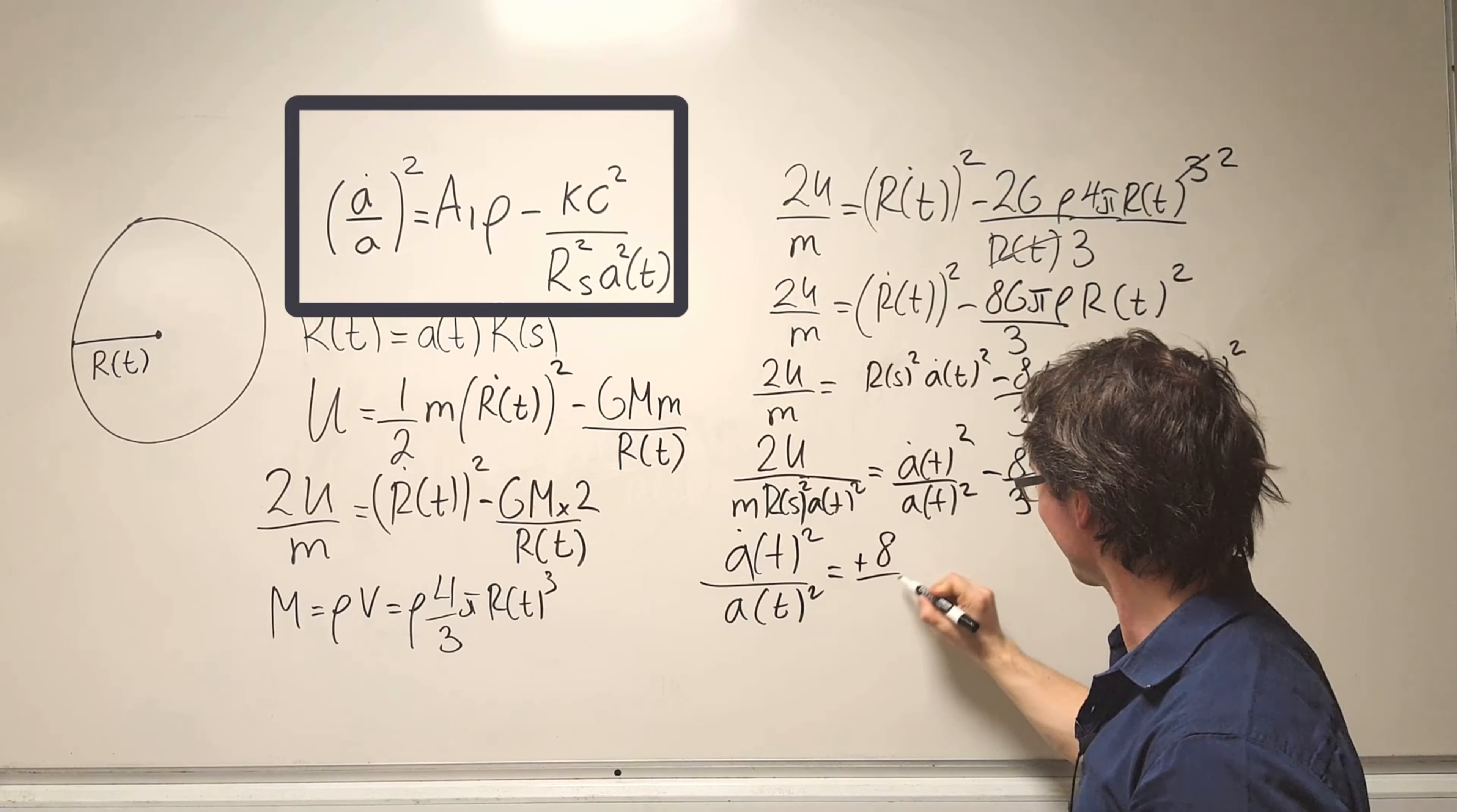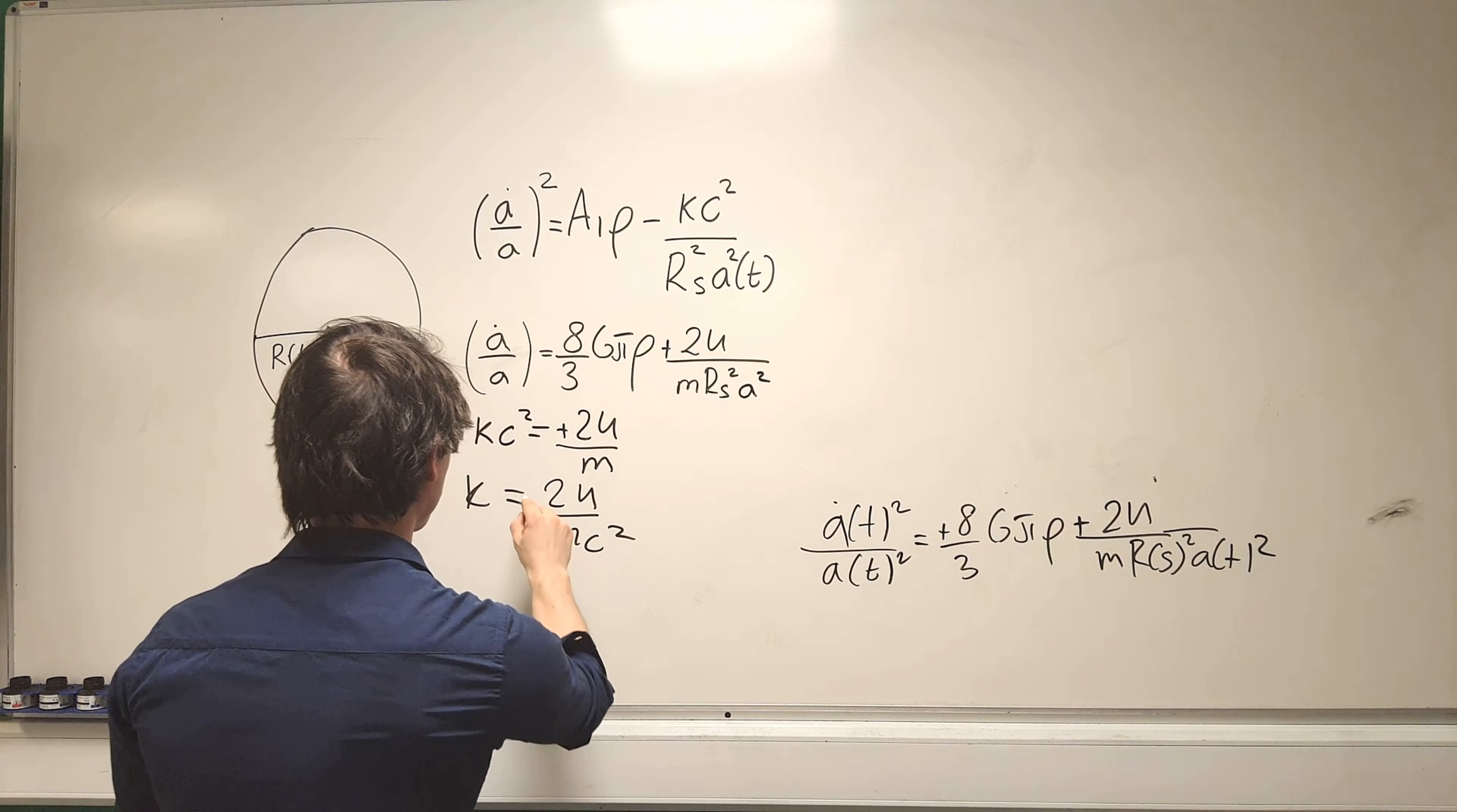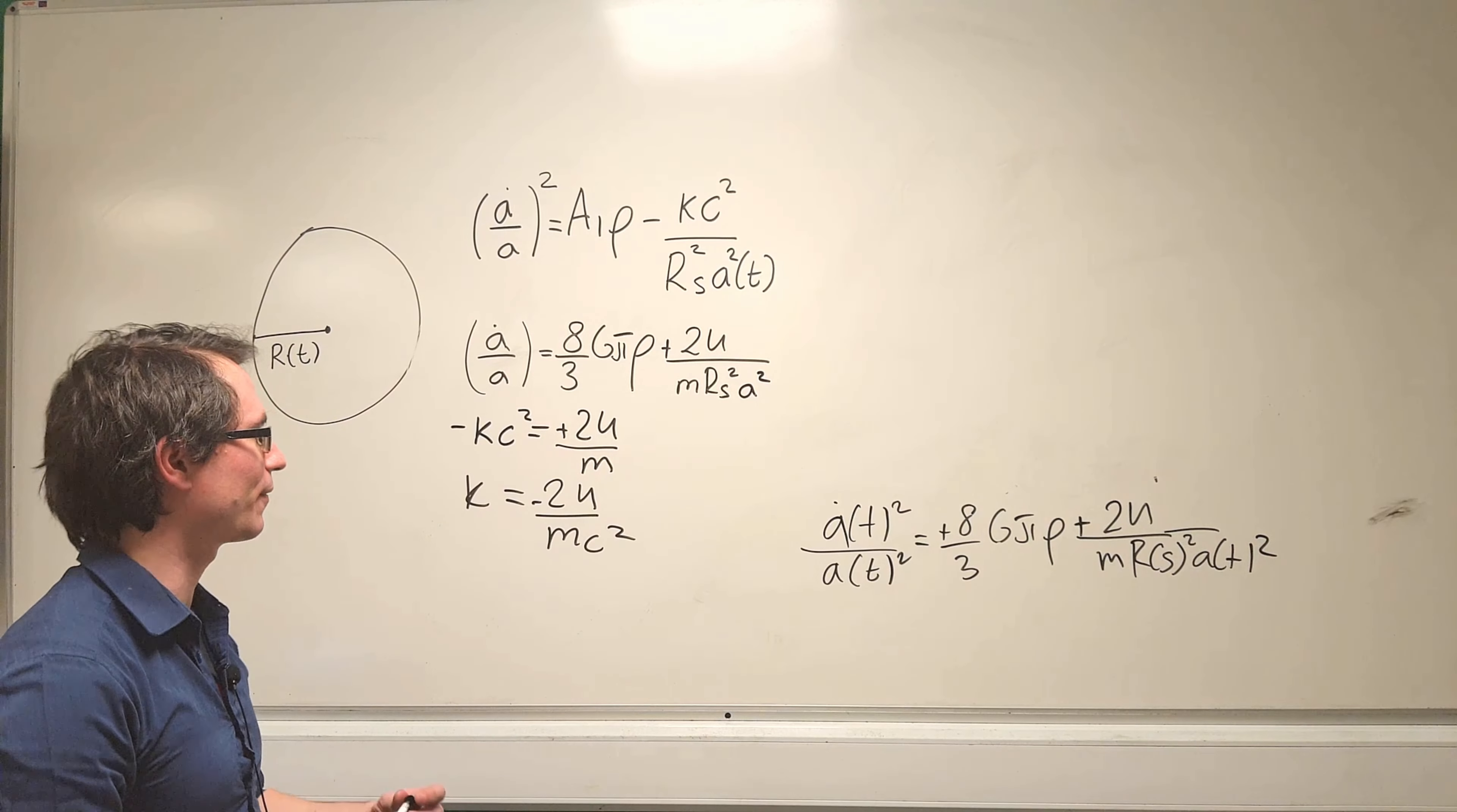According to our derivation, we can say that minus k times c squared, where c is the speed of light, will have to be equal to plus 2U over m, meaning that this parameter k will be equal to 2U over m c squared with a negative sign.